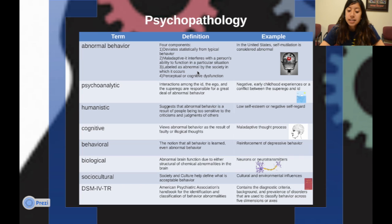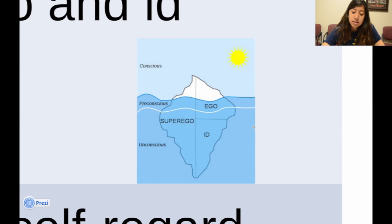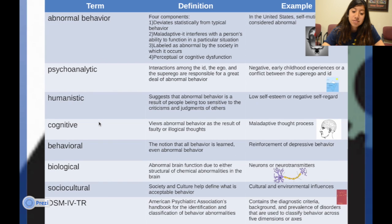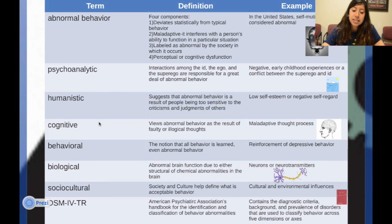Let's look at the psychoanalytic view. Interactions among the ID, the ego, and the superego are responsible for a great deal of abnormal behavior. An example is a negative early childhood experience that could create conflict between the superego and the ID. Think about that picture when you look at psychoanalytic.